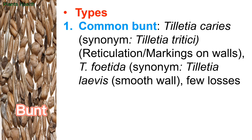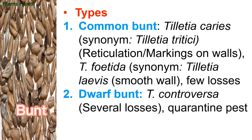If there are reticulations or markings on the teliospore walls, they are caused by Tilletia caries. In the case of Tilletia foetida, the teliospore wall is smooth. So this common bunt causes few losses.